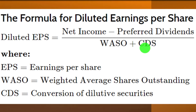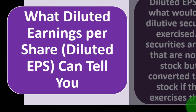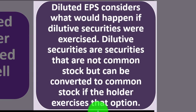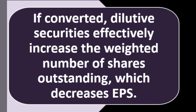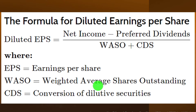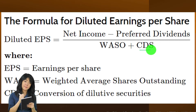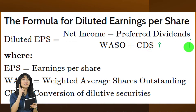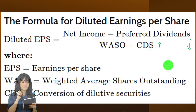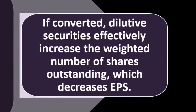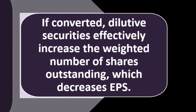Diluted earnings per share considers what would happen if diluted securities were exercised. Diluted securities are not common stock but can be converted to common stock if the holder exercises that option. If convertible diluted securities are exercised, they effectively increase the weighted number of shares outstanding, which decreases the earnings per share. That is why it is called the diluted EPS — it will typically be less than the normal earnings per share.